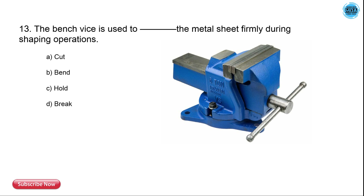The 13th question is: the bench vise is used to do what to the metal sheet firmly during the shaping operation? The options are to cut, bend, hold, and break. The bench vise is used to hold the sheet metal firmly during the shaping operation.